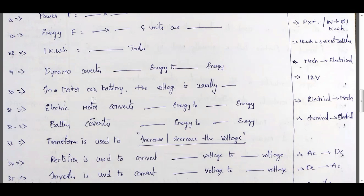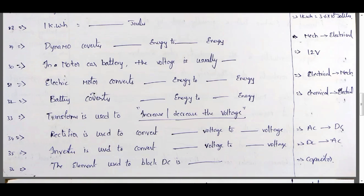Battery converts chemical energy to electrical energy. Transformer is used to change the voltage — it steps up or steps down the voltage, meaning it increases or decreases the voltage.